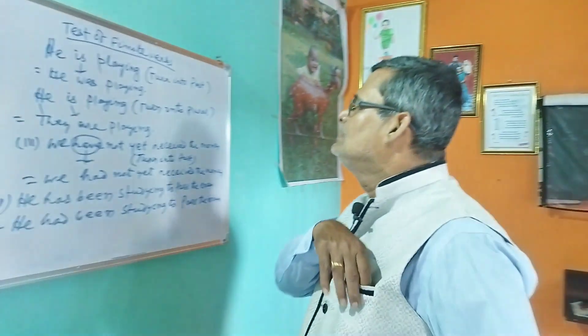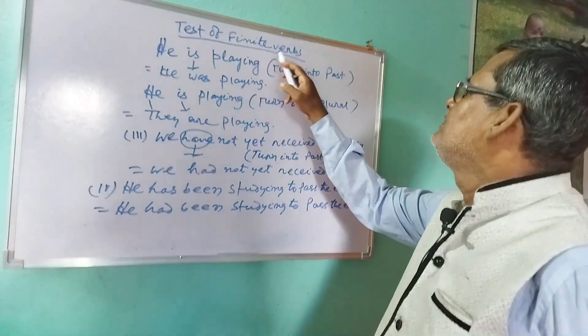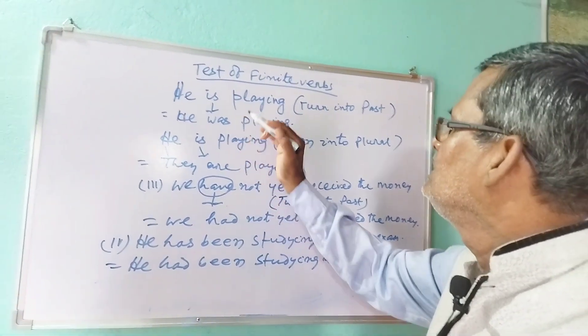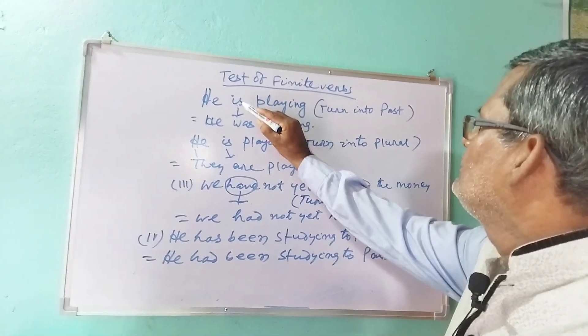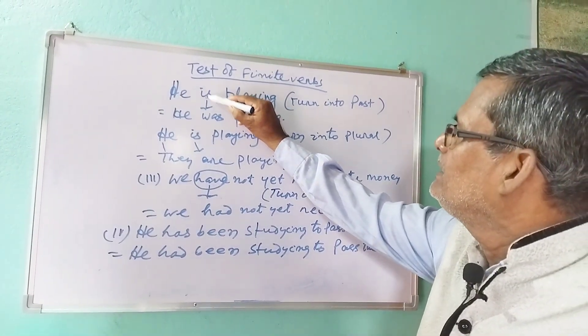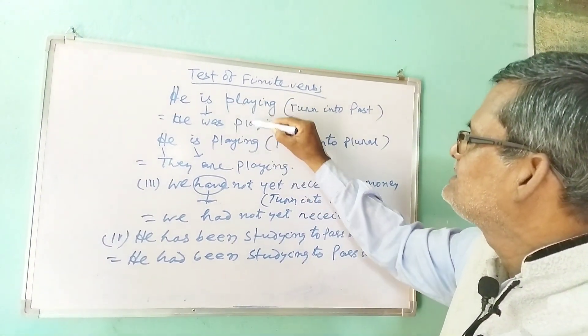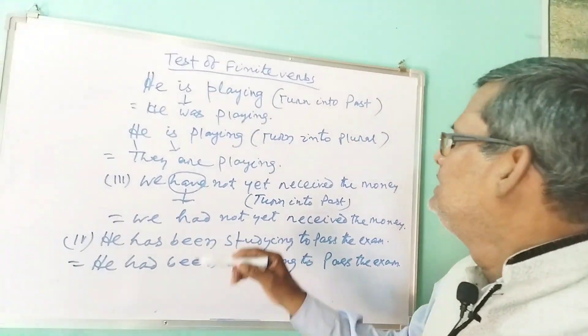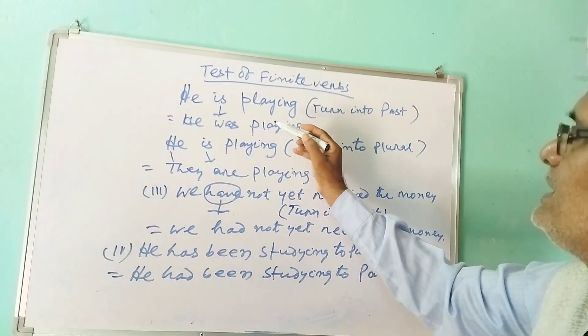Today I will go into the depth of finite verbs — how to test them — and tell you other things for simplification and better exemplification. Here I have written 'Test of Finite Verbs.' The first verb or the only verb is the finite verb. For example, 'He is playing' — there are two verbs; 'is' is the finite verb. To test it, turn it to past: 'He is playing' becomes 'He was playing.' Only 'is' becomes 'was,' so the verb which can be turned into past form is the finite verb.